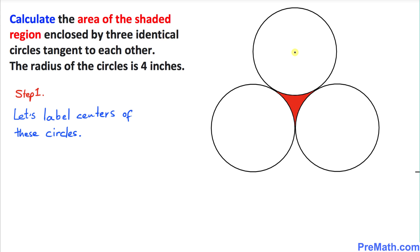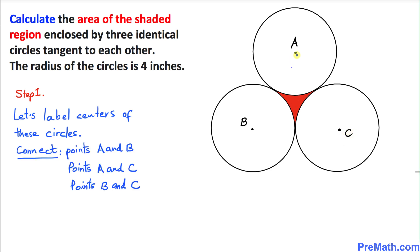Here is our very first step. Let's label the centers of these circles. The first one on the top I am going to label as A. This one on the left hand side is going to be our center B, and this is going to be our center C.